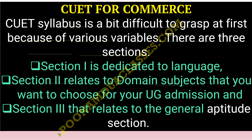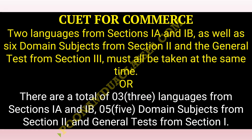Section 1 is dedicated to language. Section 2 relates to domain subjects — for commerce students, subjects like accounts, economics, and entrepreneurship are included. Section 3 relates to the general specific test. A student can choose a maximum of 9 subjects: 2 languages, 6 domain subjects, and the general test. You can have up to 15 languages, 5 domain subjects, or 8 general test choices.